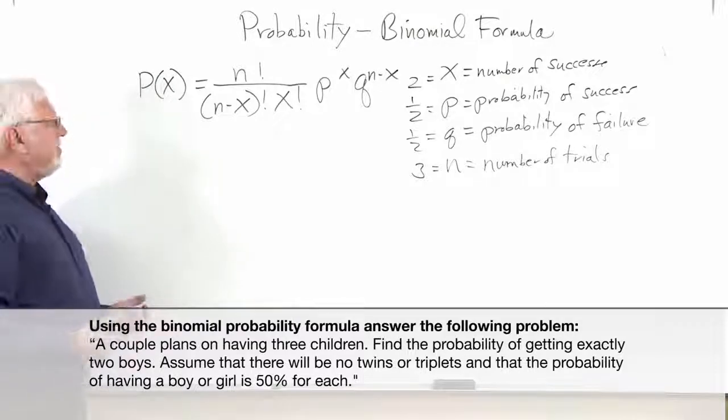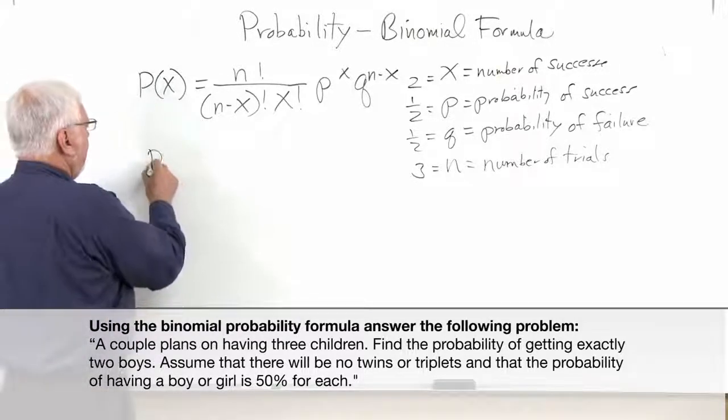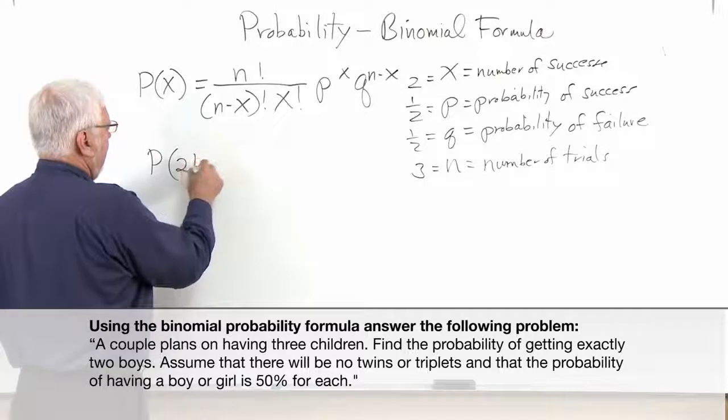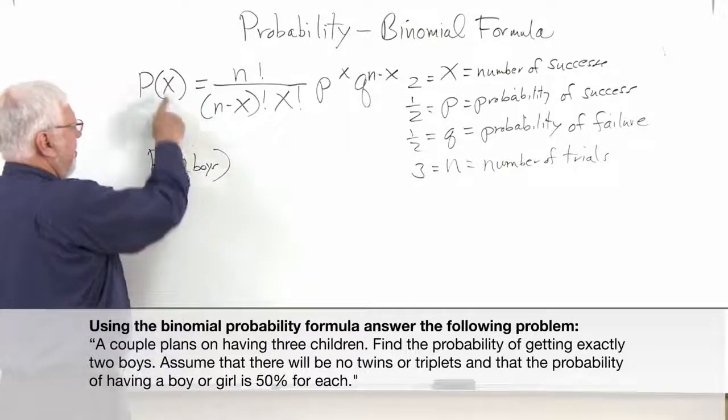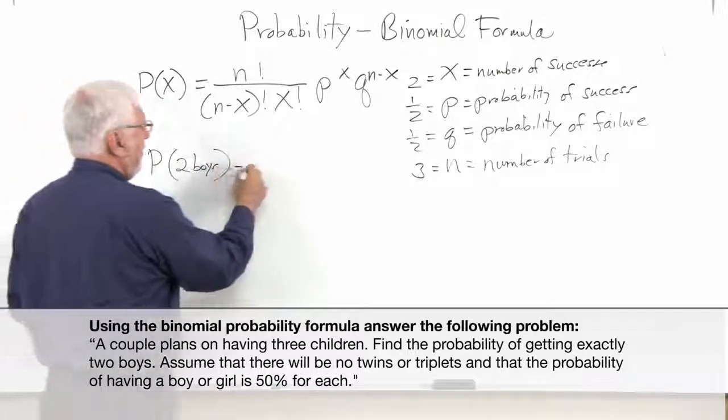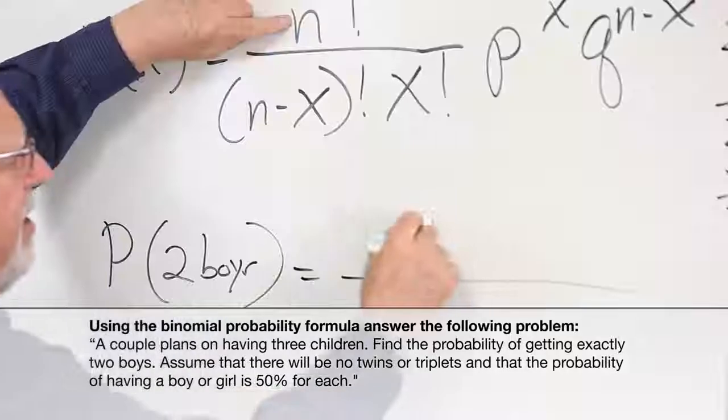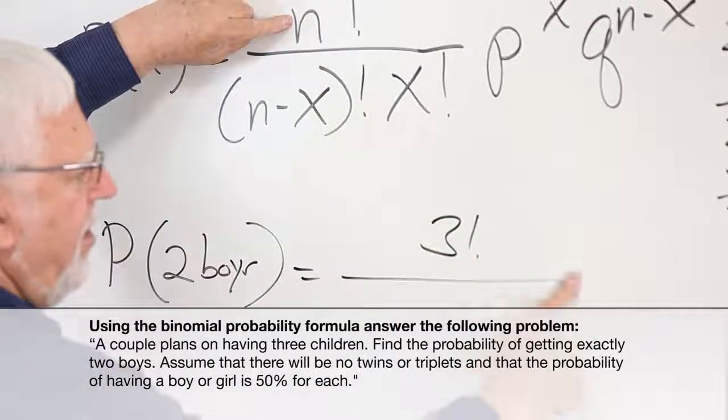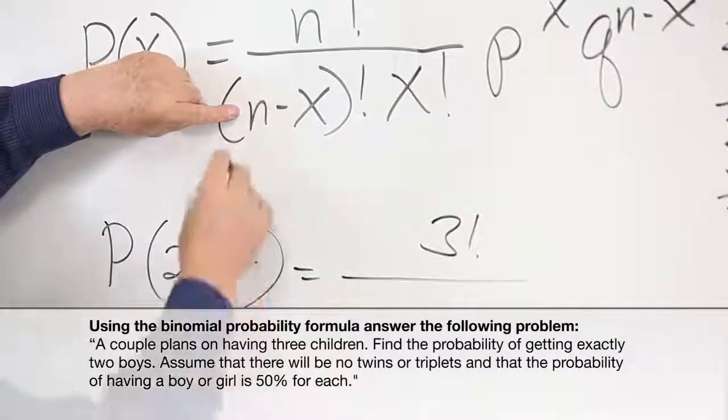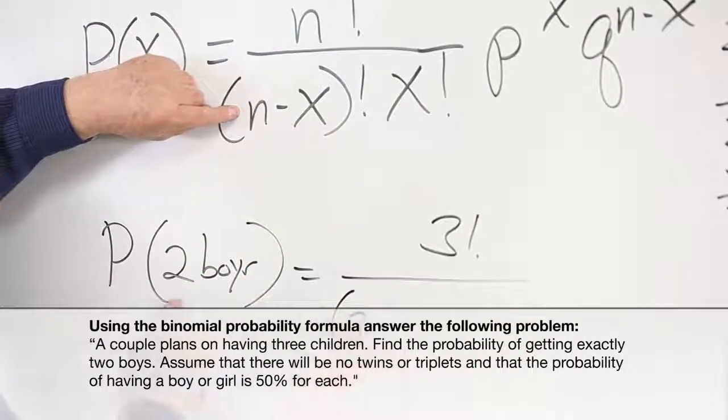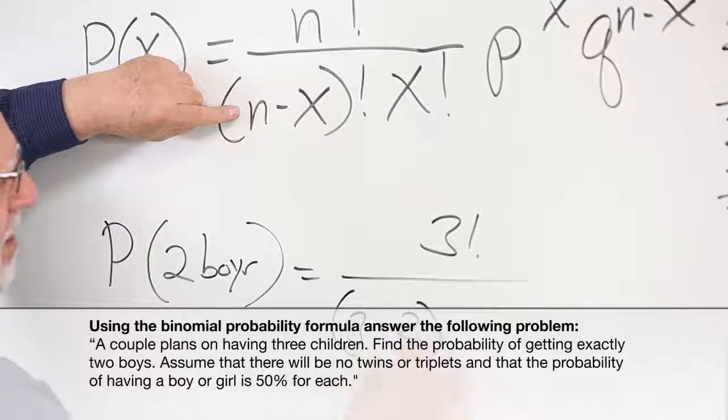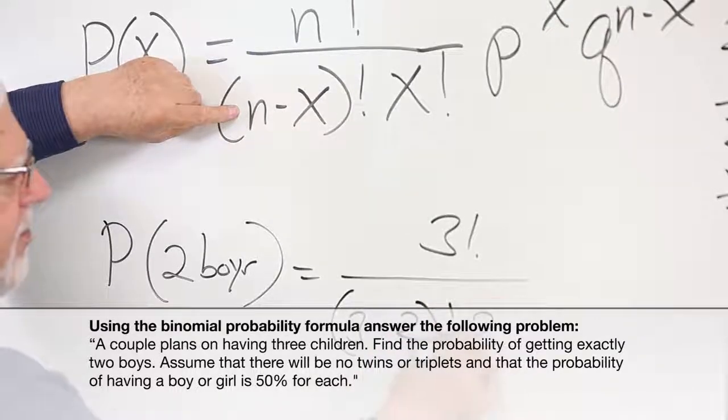So the probability of getting two boys, now we replaced our x with what we want, is n factorial, and n is in this case three, three factorial, all over n which is three minus our two factorial, and our two factorial.